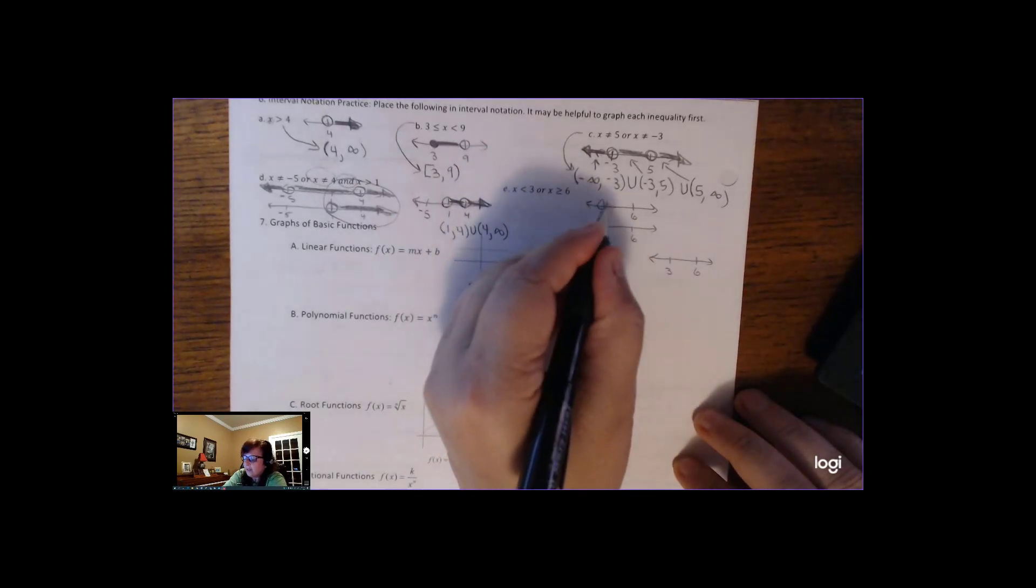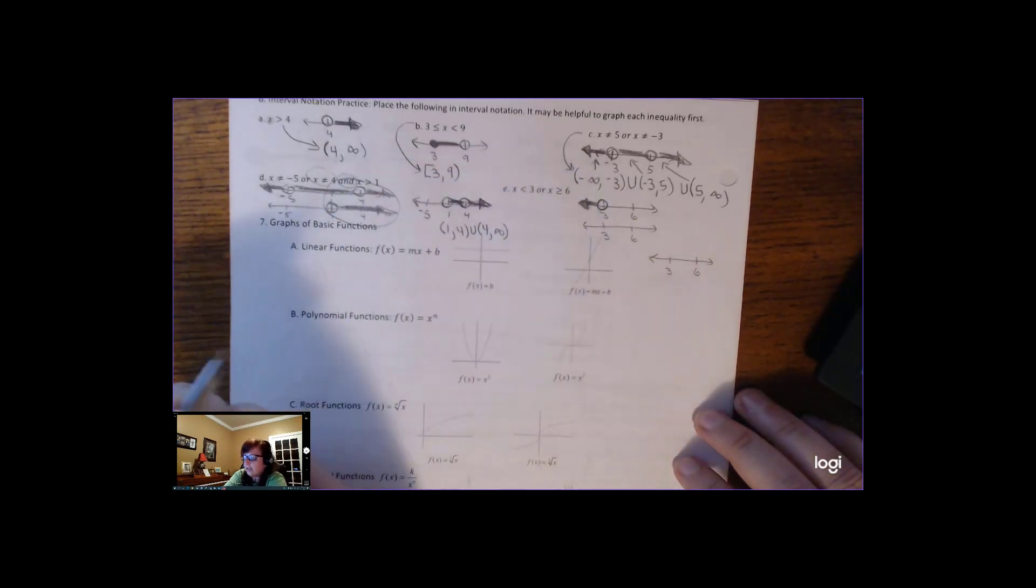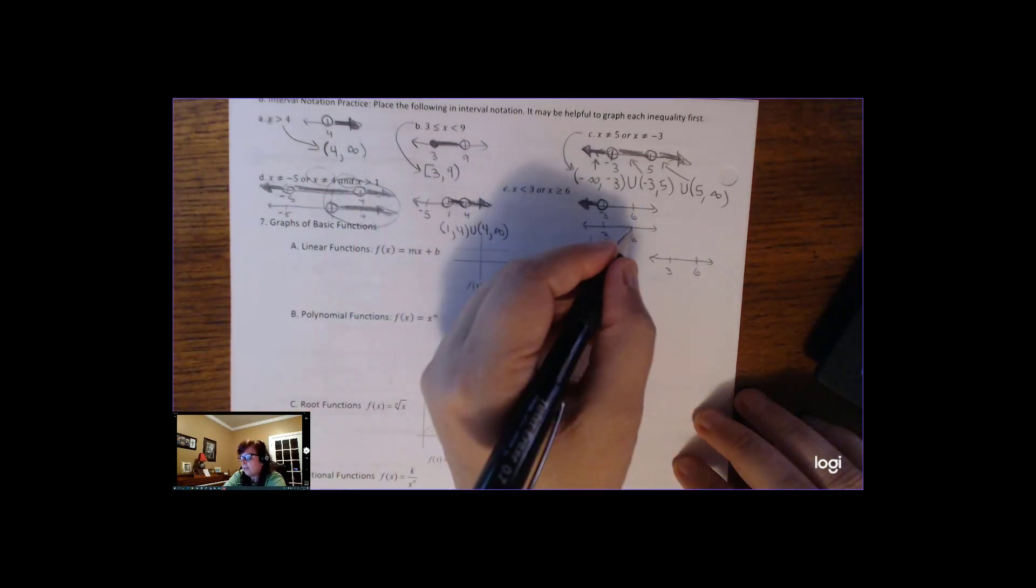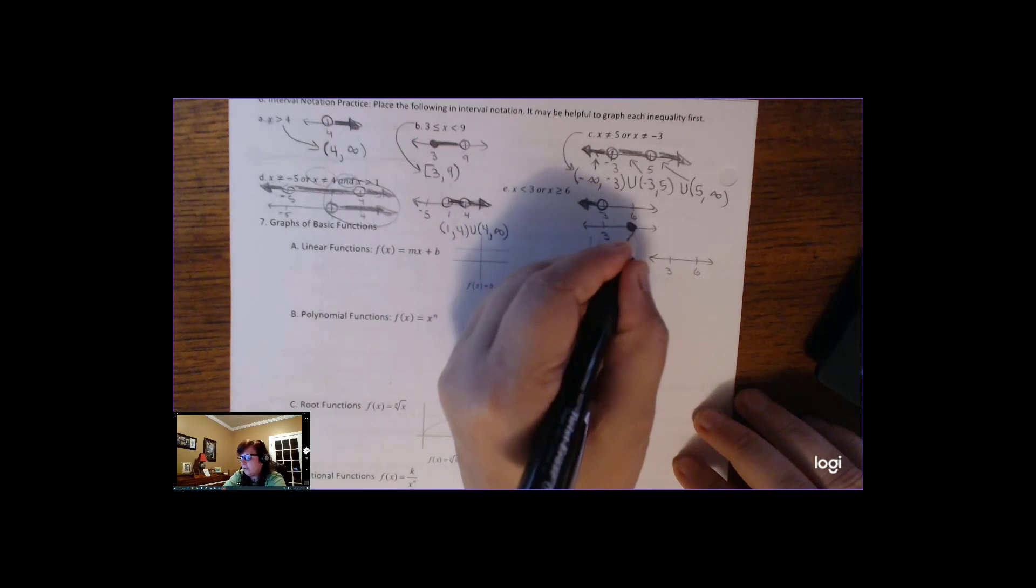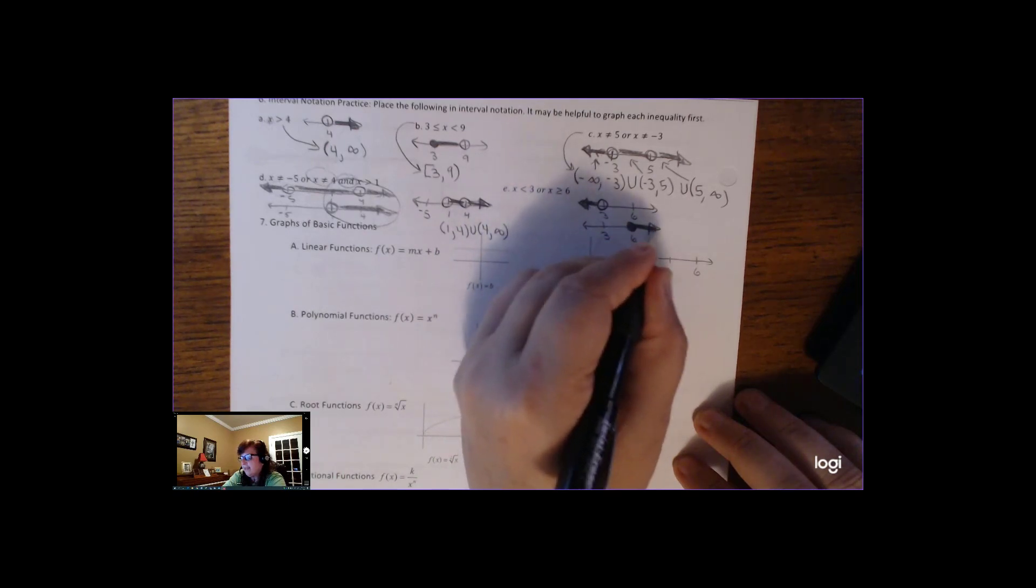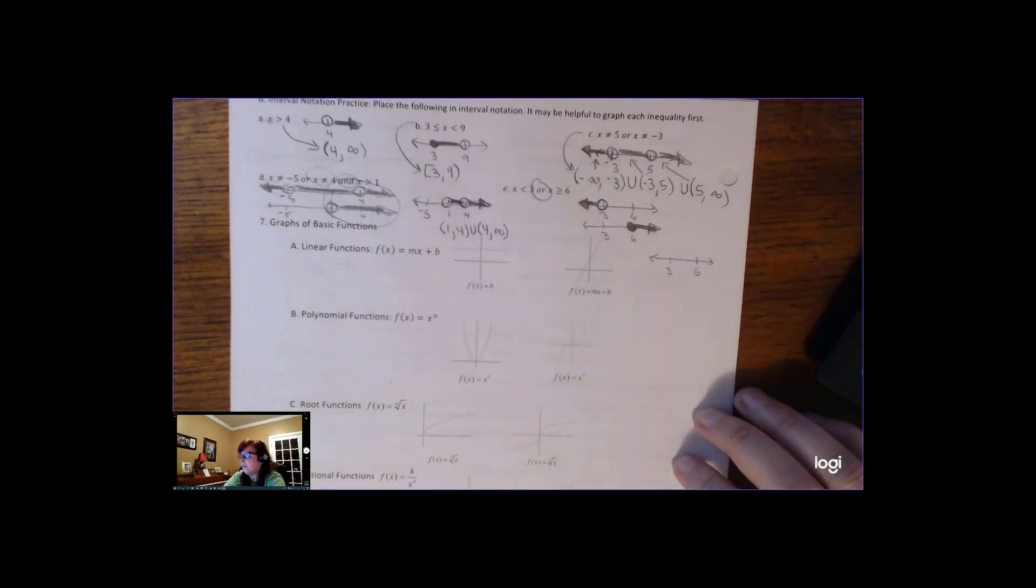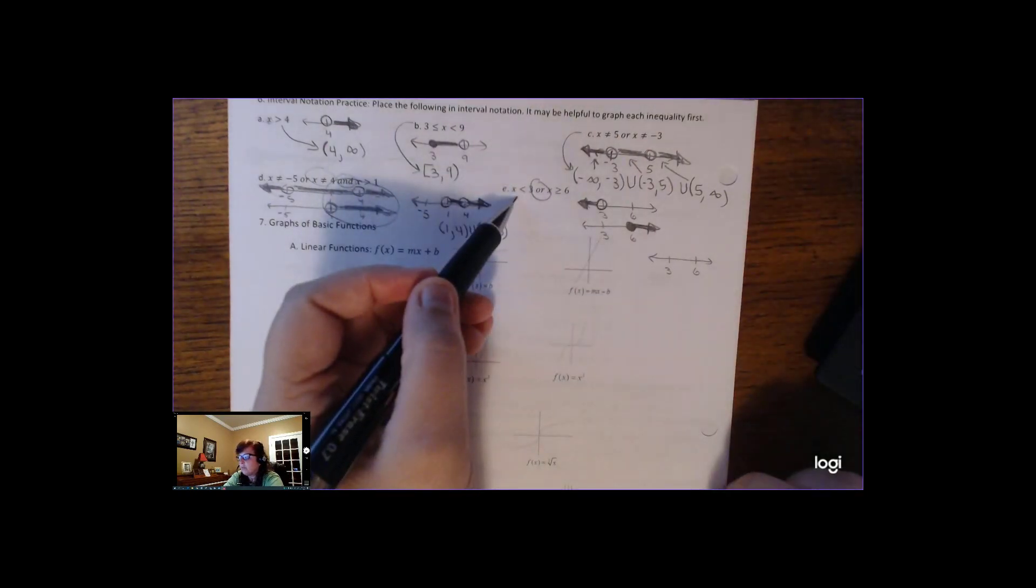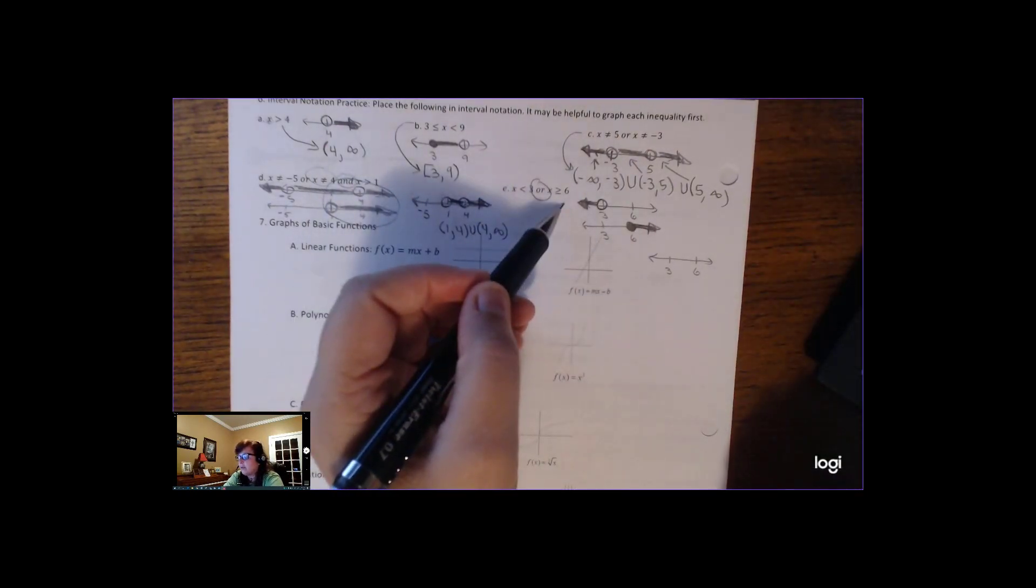So x is less than 3 means that all the numbers to the left of 3 but can include 3. And x is greater than or equal to 6 would be colored in circle on 6 and to the right. And here's the difference between and and or.